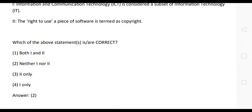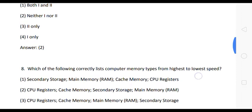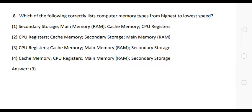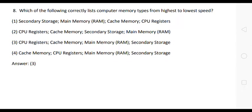Question 8: Which of the following correctly lists computer memory types from highest to lowest speed? The correct answer is option 3: CPU registers → cache memory → main memory (RAM) → secondary storage.